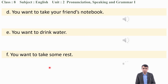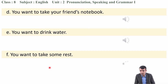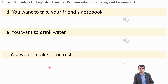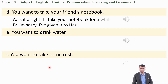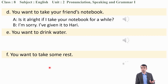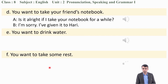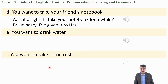Situation D: you want to take your friend's notebook. Ask for permission using any structure. 'Is it all right if I take your notebook for a while?' — 'I'm sorry, I've given it to Hari.' Situation E: you want to drink water. 'Is it okay if I drink a glass of water?' — 'Yes, you can take it from the jar.'